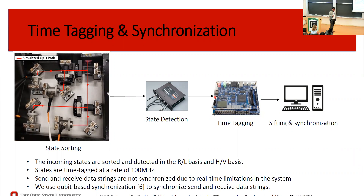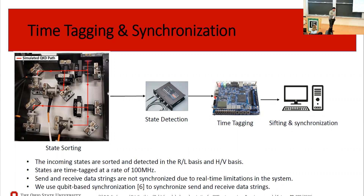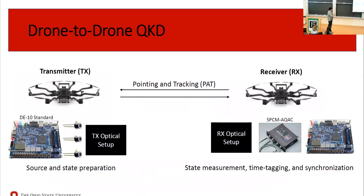Because the transmitter and receiver FPGAs run on separate crystal oscillators, the data is asynchronous, and the large timing offsets make sifting impossible without correction. To overcome this, we use a novel approach called qubit-based synchronization — developed by a colleague at OSU — which allows us to properly synchronize the data and perform sifting correctly.